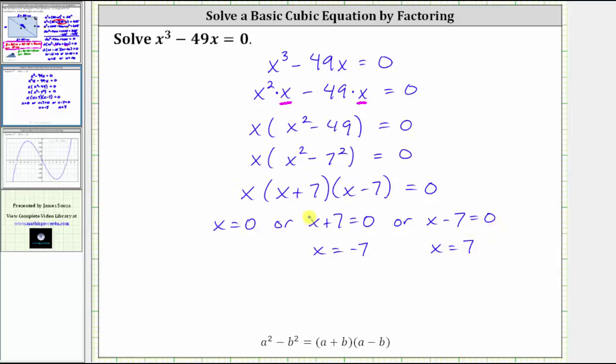So we have three solutions. Our solutions are x equals zero, or x equals negative seven, or x equals positive seven.